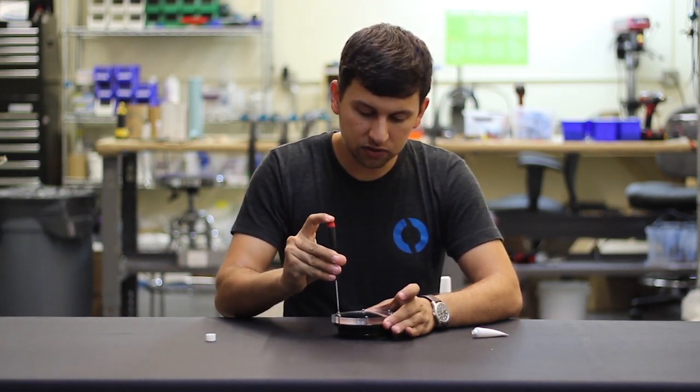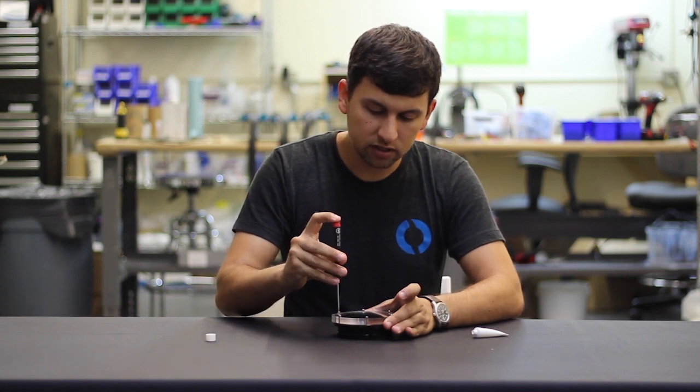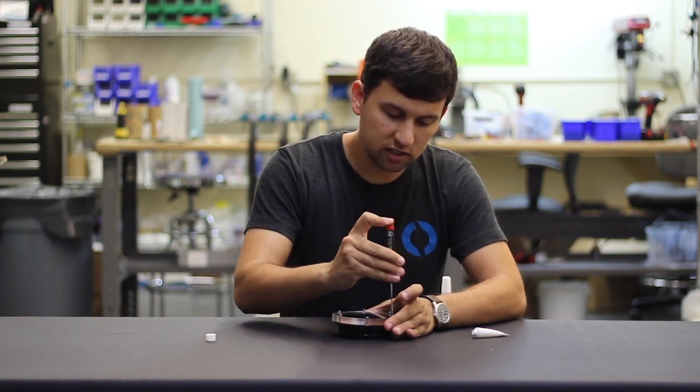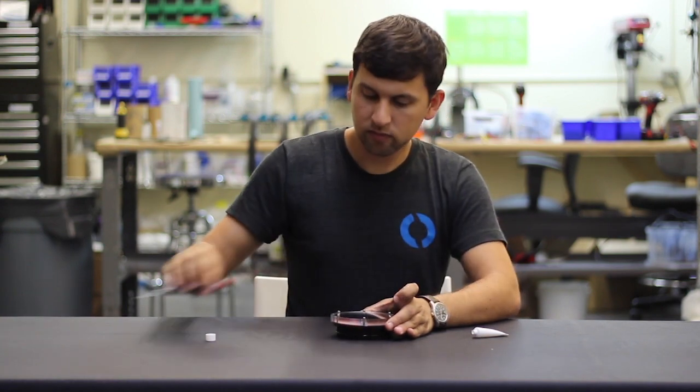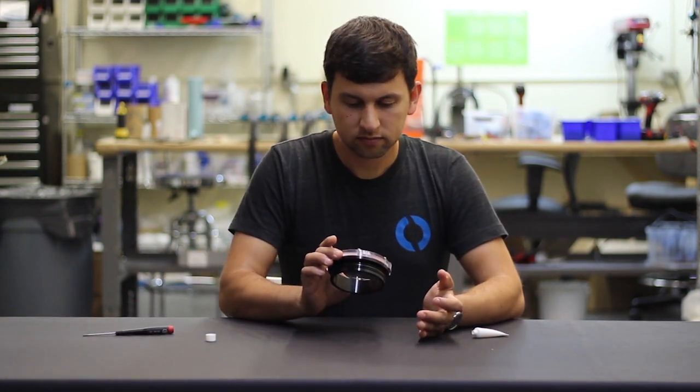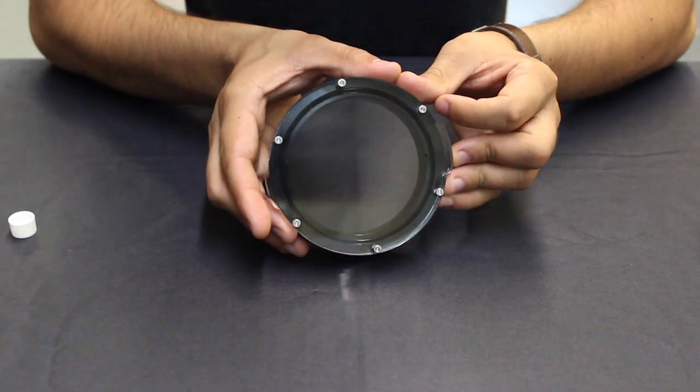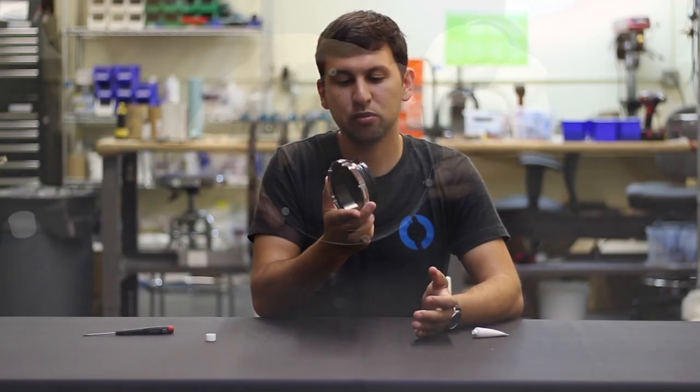As you tighten down the screws, you'll see the face seal o-ring compressed and press against the end cap. There you have it, the o-ring flange with the end cap in place.